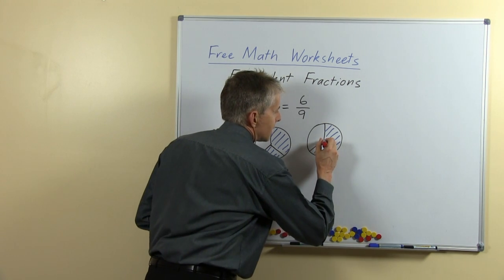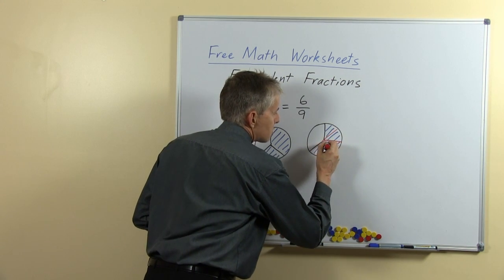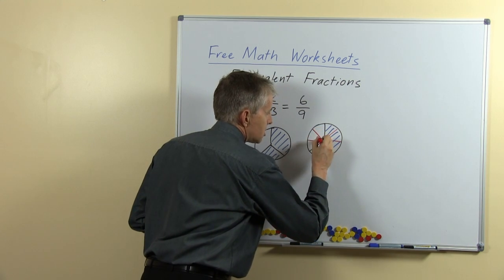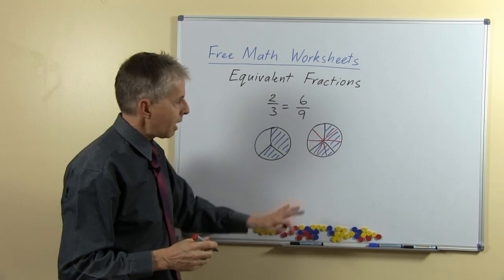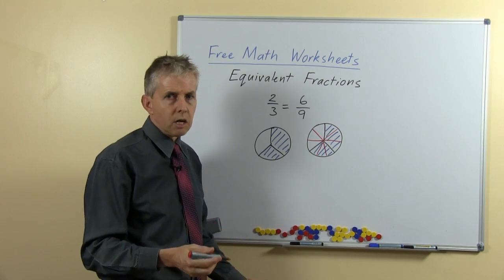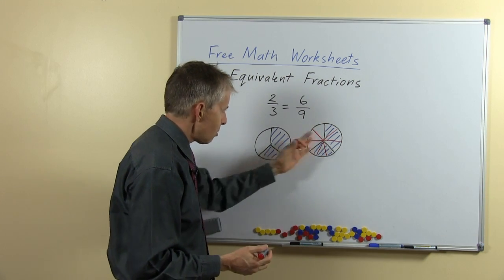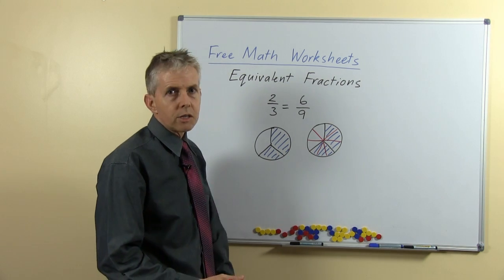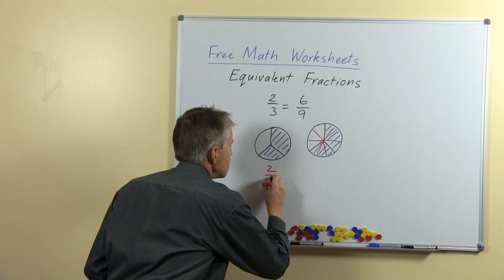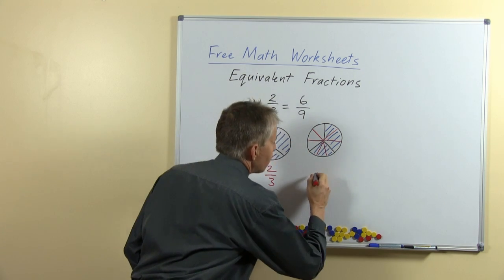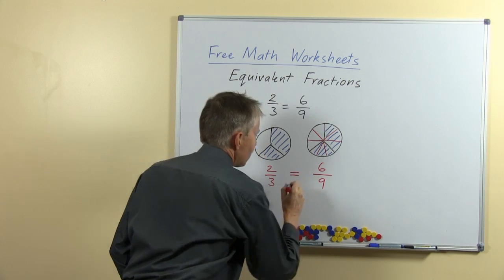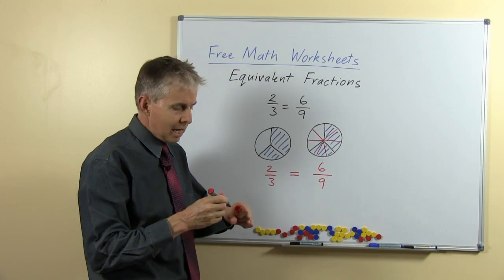Now what happens, we can ask our children, if we split the second one up like this, so that it's divided differently. Have we changed the amount that's shaded? No we haven't. It's still the same amount of blue shading as was there before. But is it the same fraction? No, of course it's not. On this side we know this is two-thirds. This one, what fraction is this? Well, there are nine pieces and six of them are shaded, and those two are equal.